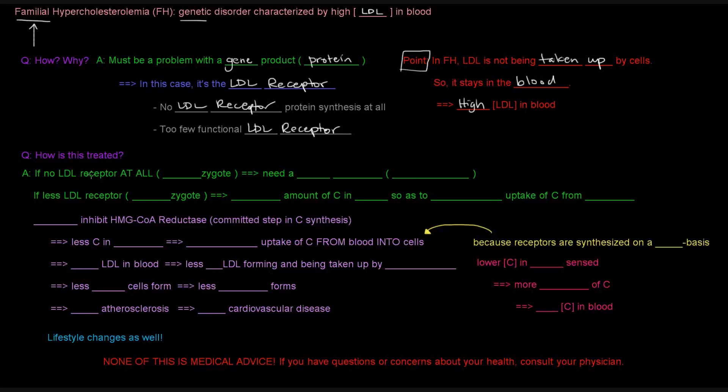So the question is, how is this treated? If an individual has no LDL receptors at all and they're a homozygote for this trait, they need a new liver, and so transplants are necessary. But if there's just less LDL receptor, which means it's not enough, in the case of a heterozygote, what can happen is different.